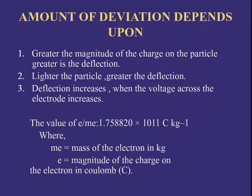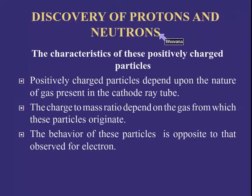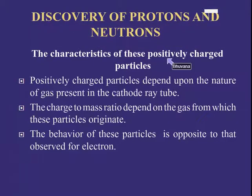I have already explained the subatomic particles — electrons, protons, and neutrons. I have already explained the discovery of electrons. Now, regarding the discovery of protons and neutrons, the positively charged particles in the cathode ray tube have characteristics totally opposite to the negatively charged particles.